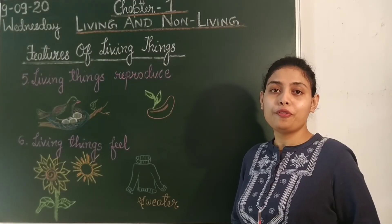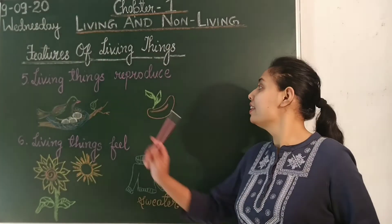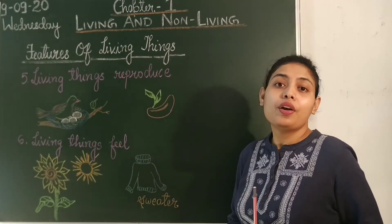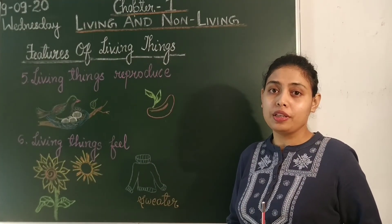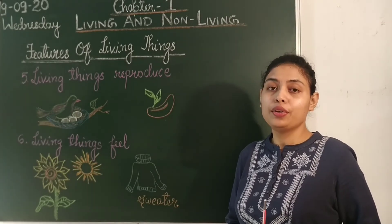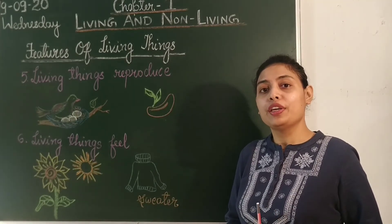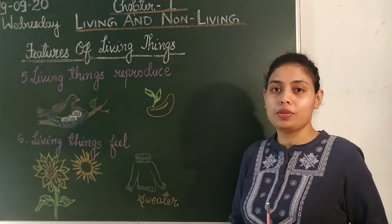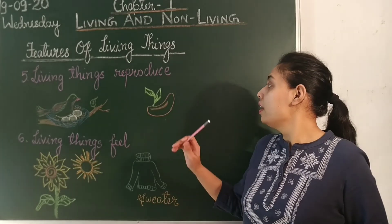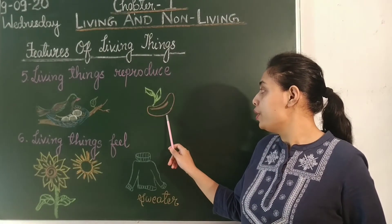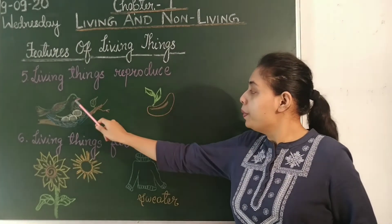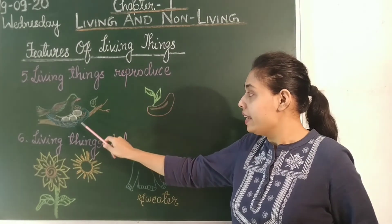Fifth feature: living things reproduce. Reproduce means to give birth to the young ones. Humans and animals give birth to babies, whereas plants reproduce through seeds. Birds lay eggs.